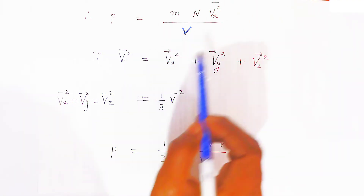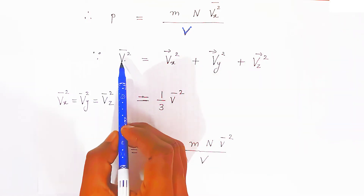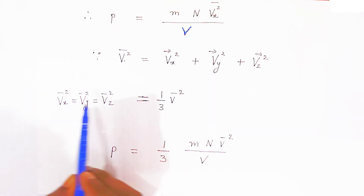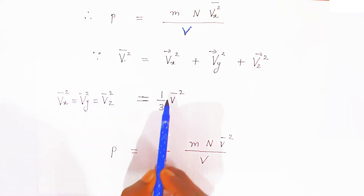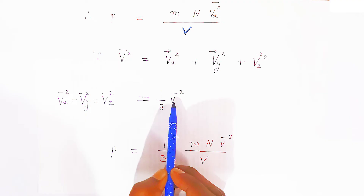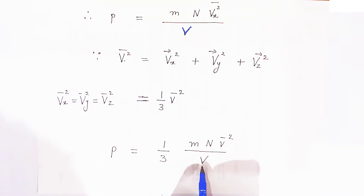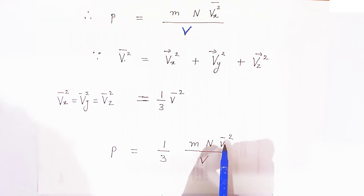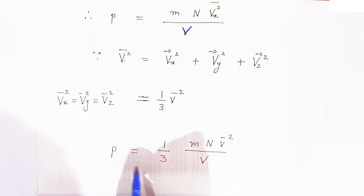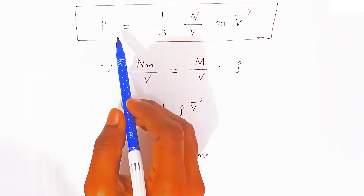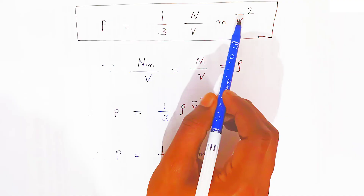Since the gas is in a cube, the mean square velocity is the same along all axes — x, y, and z. Therefore, V̄x² = (1/3)V̄², where V̄² is the mean square speed. Substituting this value, pressure equals (1/3) × m × n × V̄² divided by volume.